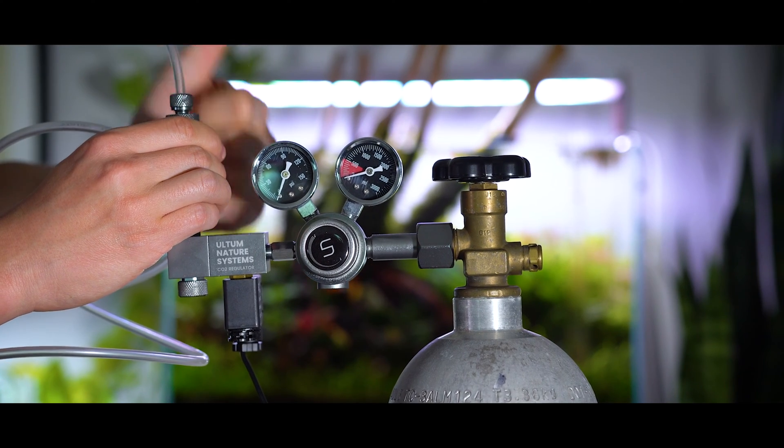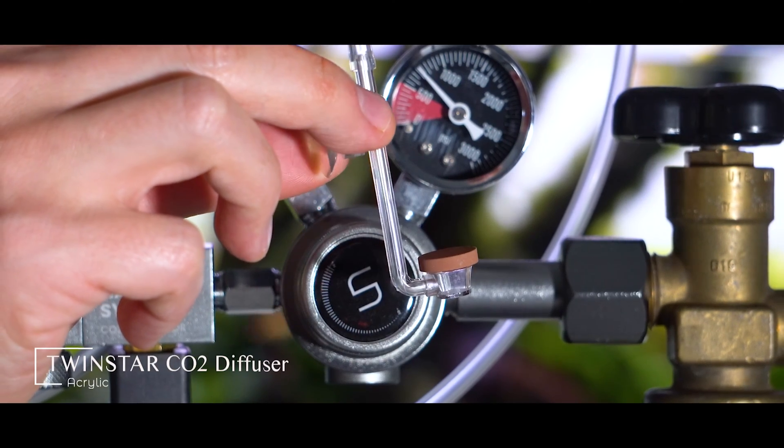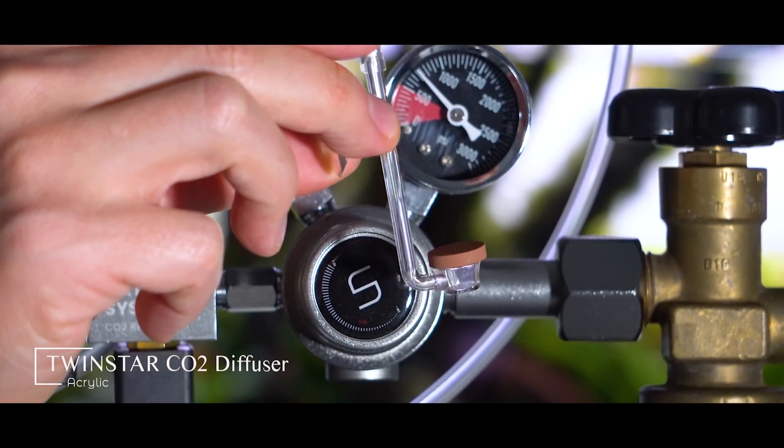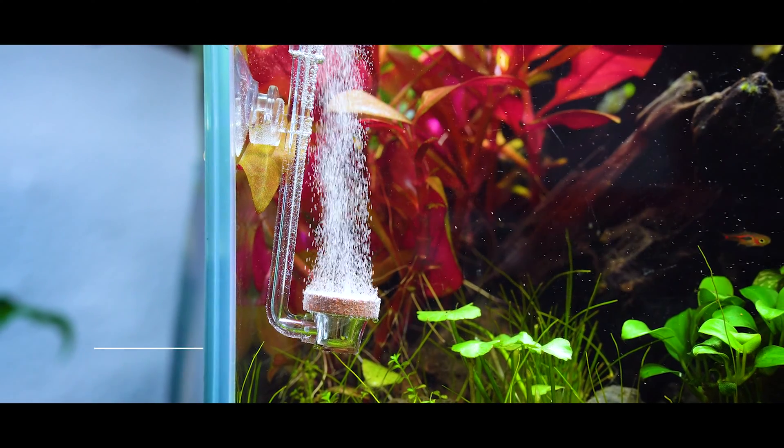With the CO2 proof hosing in place, it's time to attach a CO2 diffuser to the other end of the hosing. This is where you can really customize things. Today I'll be using the Twinstar diffuser. I like this diffuser because it's fairly inconspicuous and it does a really good job of creating tiny little CO2 bubbles.